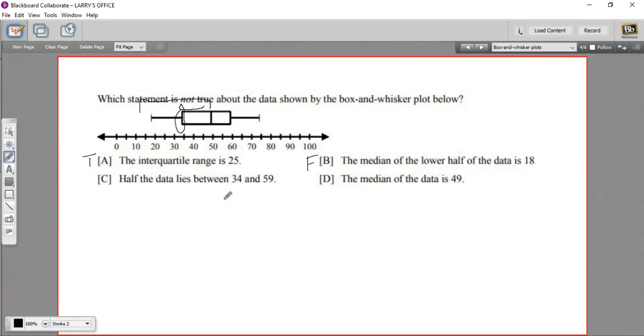Let's just read C and D just to double check. C says half the data lies between 34 and 59. So that would be here. Yeah, these are two of the quartiles in the box. So that's half of the data. So that makes sense. And then it says the median of the data is 49. And yeah, it looks like that's right at 49. So I think we found our false one. That's B. And that's a little work with box and whisker plots.